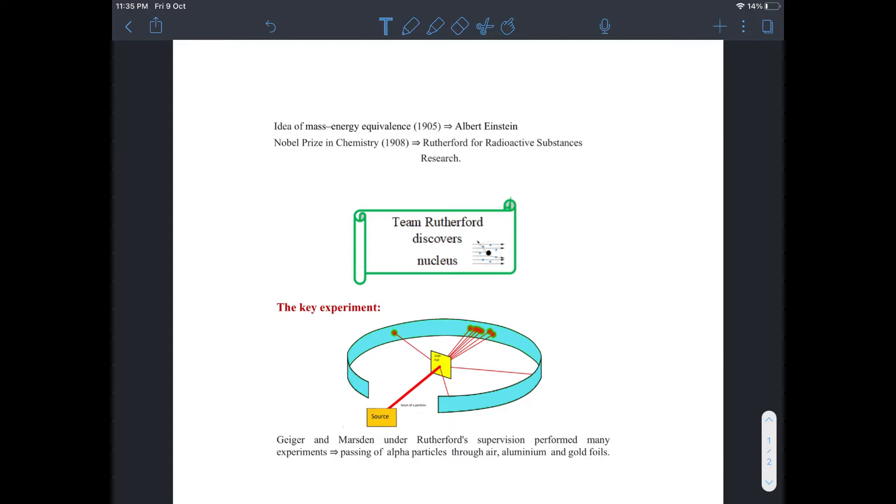According to the plum pudding model, the alpha particles would have gone through the gold foil with their trajectories being approximately the same or at most slightly bent. Rutherford's study of this data in 1911 led to the atomic theory of Rutherford.